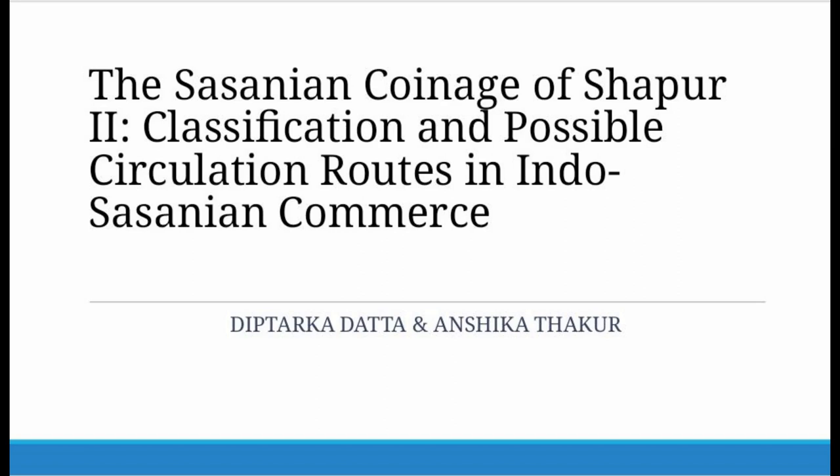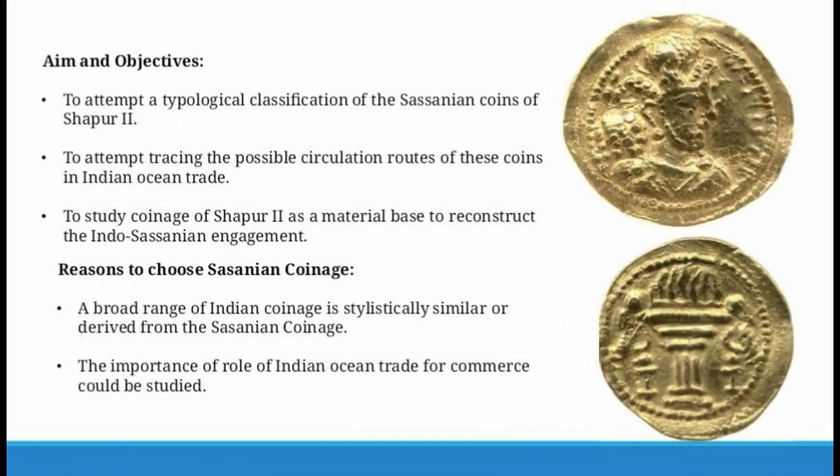The topic of our research paper was the Sasanian coinage of Shahpur II: Classification and Possible Circulation Routes in Indo-Sasanian Commerce. The aims and objectives of this paper were to form a typological classification of Shahpur II's coins and use the same to trace possible circulation routes of these coins in Indian Ocean trade.